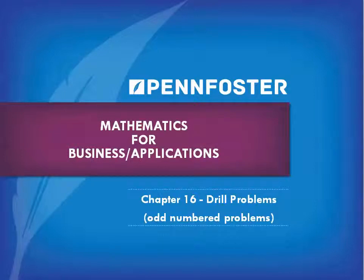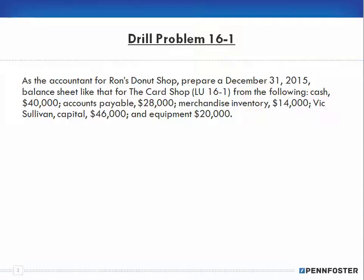Let's get to it. Drill problem one says: as the accountant for Ron's Donut Shop, prepare a December 31st, 2015 balance sheet — like that for the Card Shop, lesson unit 16-1 — from the following: cash is $40,000, accounts payable is $28,000, merchandise inventory is $14,000, Vic Sullivan capital is $46,000, and equipment is $20,000.